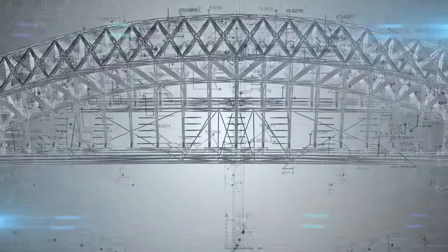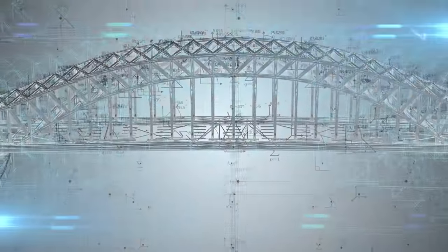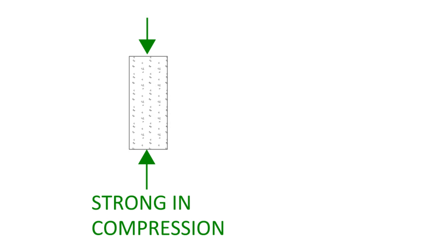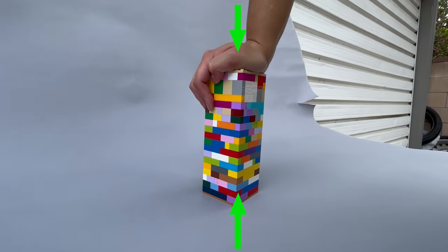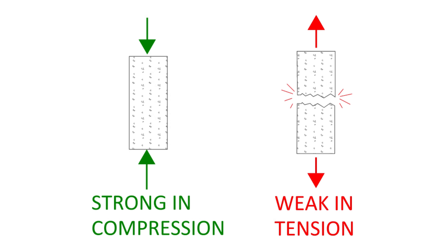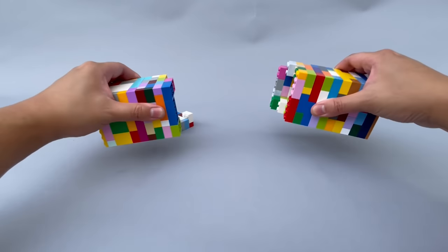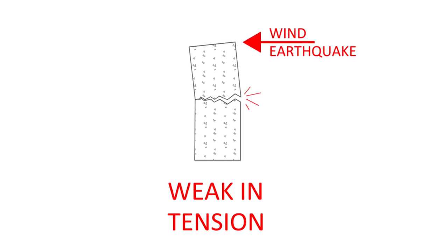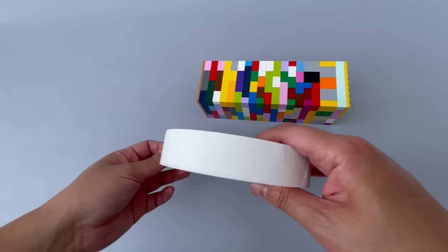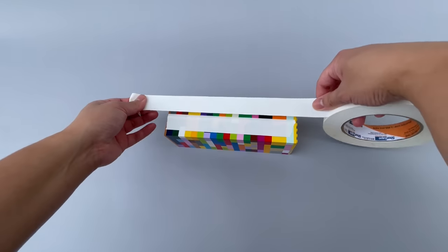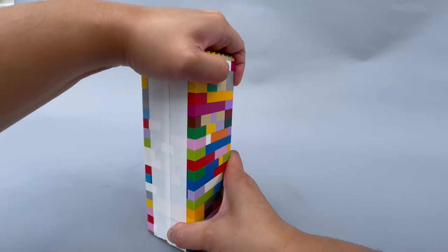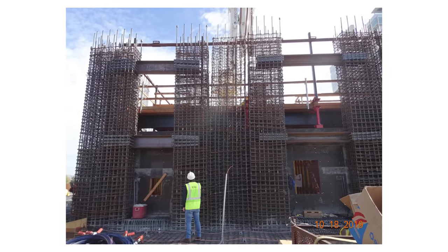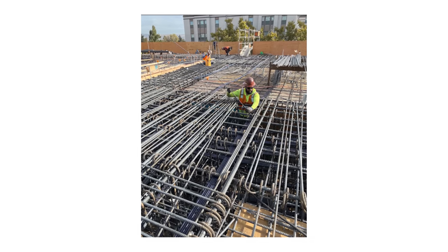Structural engineers use their expertise in mathematics, physics, and material engineering principles in order to help them design. For example, concrete is strong in compression — you can think of our concrete core walls as a stack of Legos; when you push down on it, it's not going to go anywhere. But it's super weak in tension, meaning that if you apply lateral loads such as wind or earthquakes, the concrete is going to fail. But if we add reinforcing — like duct tape for our Lego example — then the concrete won't collapse. That's why we add steel bars to reinforce the concrete and make up for its weakness.